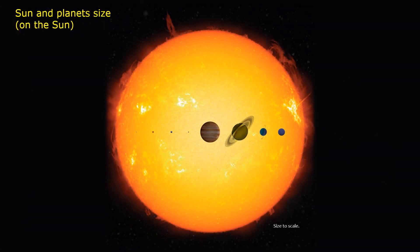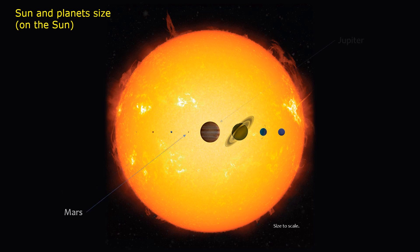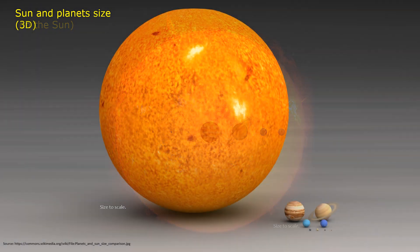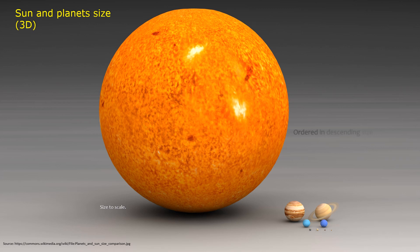Planet size sequence continued: Sun, Mercury, Venus, Earth, Mars, Jupiter, Saturn, Uranus, Neptune. Sun and planet size in 3D, ordered in descending size left to right, top to bottom.